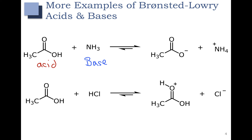In this bottom example we again have a carboxylic acid, but in this case the carboxylic acid is accepting a proton. Let's highlight that proton here — the HCl is losing a proton and it becomes that proton attached to the carboxylic acid. Whereas in the top example the carboxylic acid had a proton that ammonia picked up. So here the carboxylic acid is our base, accepting a proton, and HCl is donating a proton.